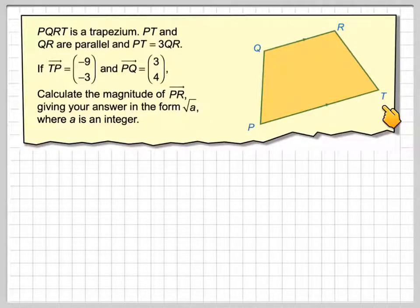PQRT is a trapezium, so it means that this side is parallel to this side PT. PT and QR are parallel, but PT is three times the length of QR, so the diagram is not to scale.